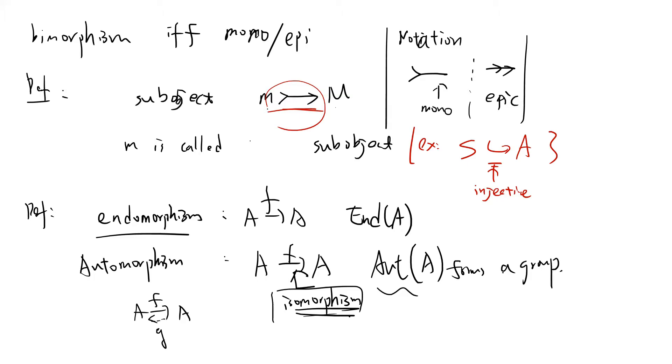Given A is a group, you can compute its automorphism group. Both endomorphism and automorphism can be generalized into general category theory. Category theory is somewhat like a framework — there are a lot of definitions but we try to generalize everything from other math subjects.